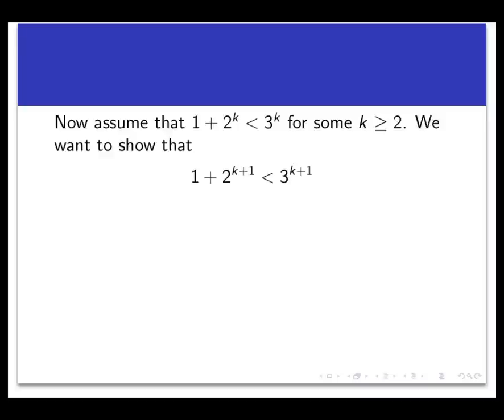Now for the inductive step. For the inductive hypothesis, we assume 3^k > 1 + 2^k for some integer k ≥ 2, and we want to prove that 3^(k+1) > 1 + 2^(k+1). I'll rewrite this as 1 + 2^(k+1) < 3^(k+1). Starting with the left-hand side, 1 + 2^(k+1), we want to get this less than 3^(k+1). Somewhere 3's need to show up, and I should try to use the inductive hypothesis — the assumption that 1 + 2^k < 3^k.